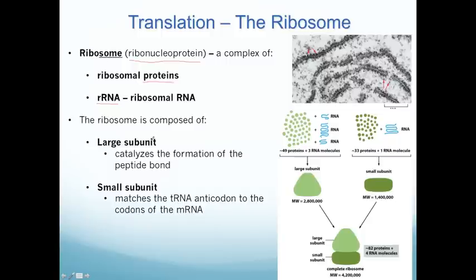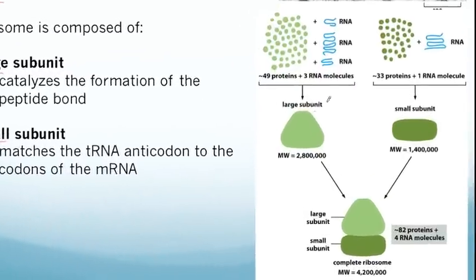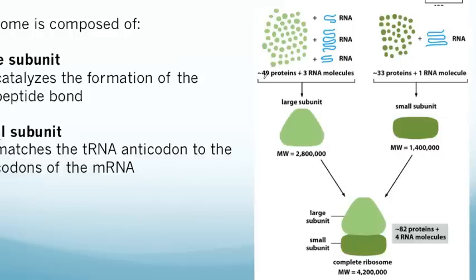The key to remember about ribosomes is that they're composed of multiple subunits — a large subunit, which is the portion of the ribosome that catalyzes the formation of the peptide bond, and a small subunit that binds to the mRNA and is responsible for matching the tRNA anticodon to the mRNA codon. The ribosome is a complex of RNA and proteins. They're called large and small just because of their molecular weight, and they come together to form the fully functional ribosome.